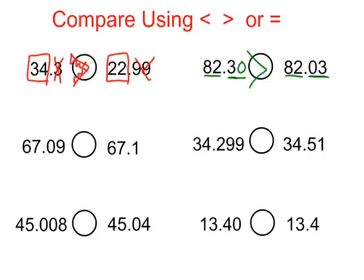On the next four examples, all the whole numbers are the same. These are both 67. This one is in the hundredths and this decimal is in the tenths. So I'm going to go ahead and add a zero here. Now they're both in the hundredths, which makes them a little bit easier to compare. We have 9 hundredths and we have 10 hundredths. 10 hundredths is larger.